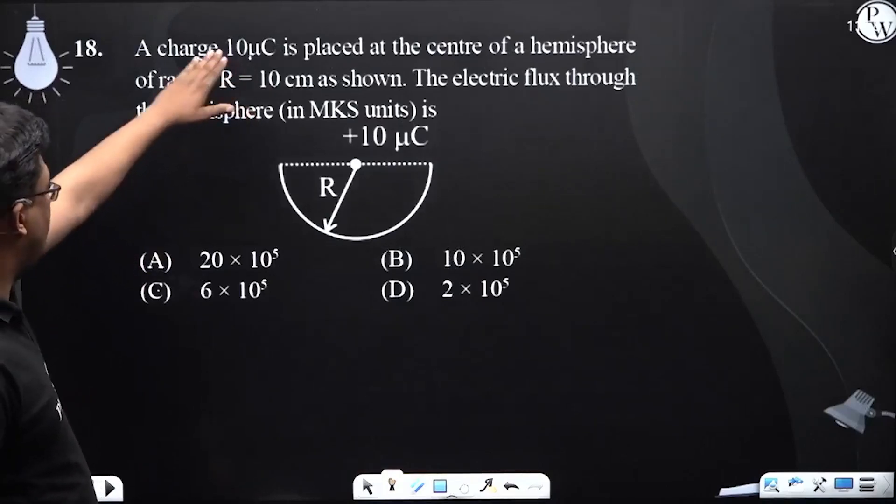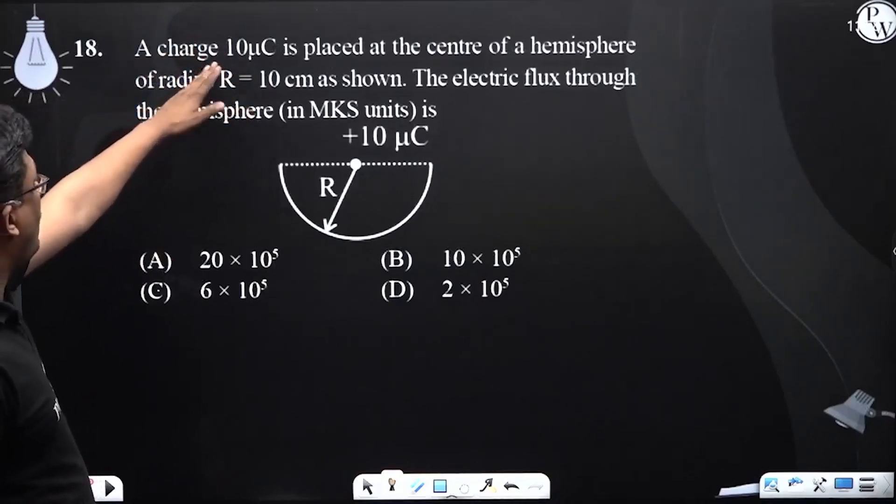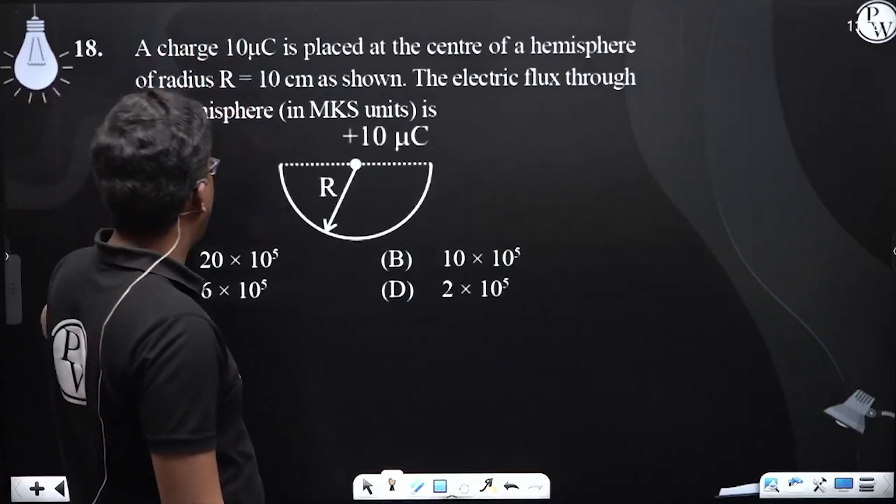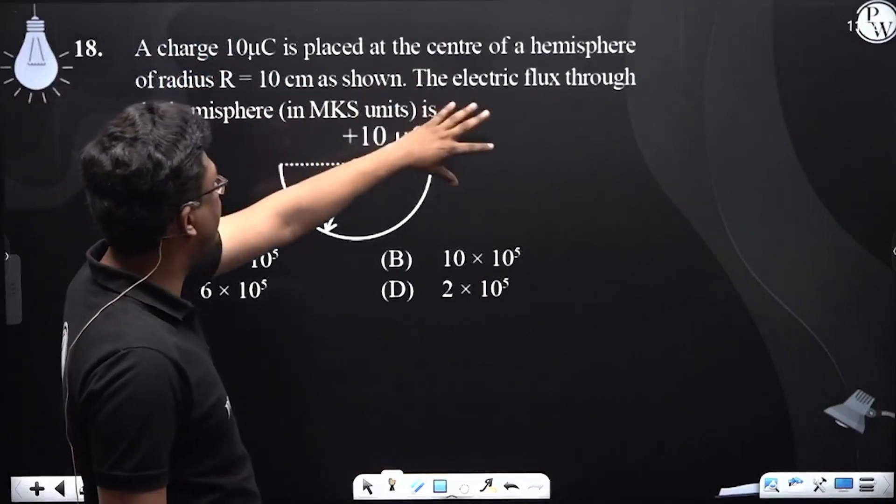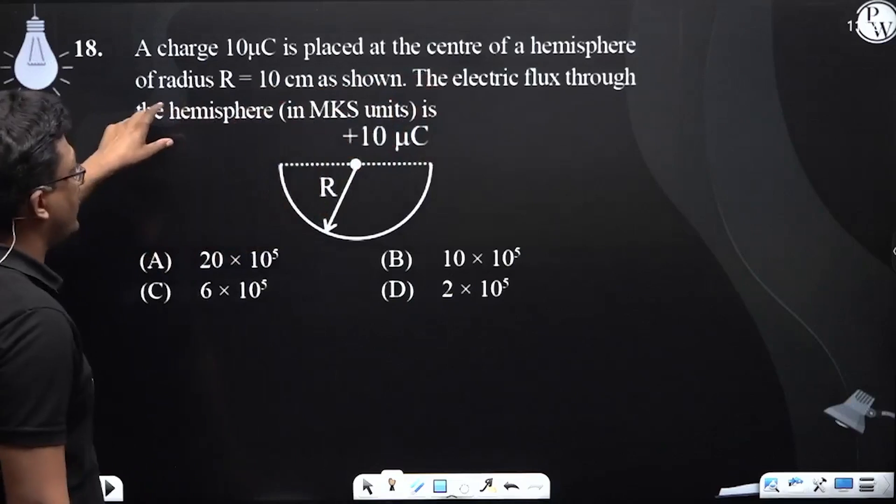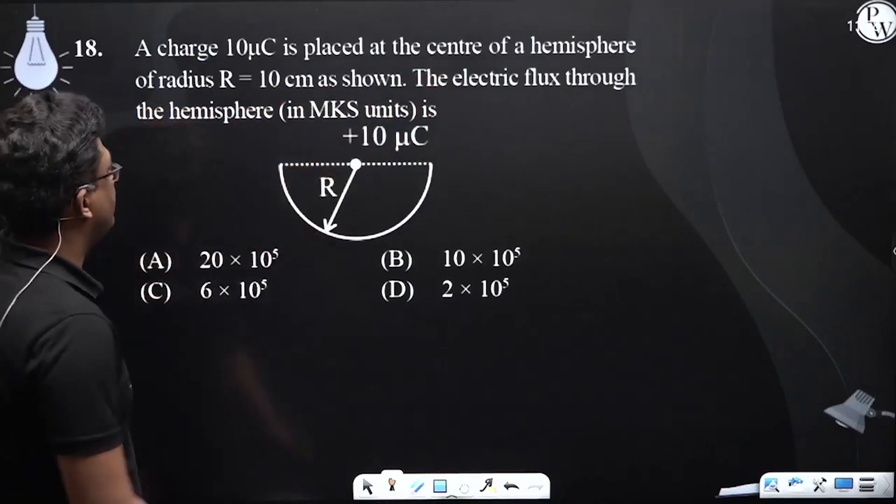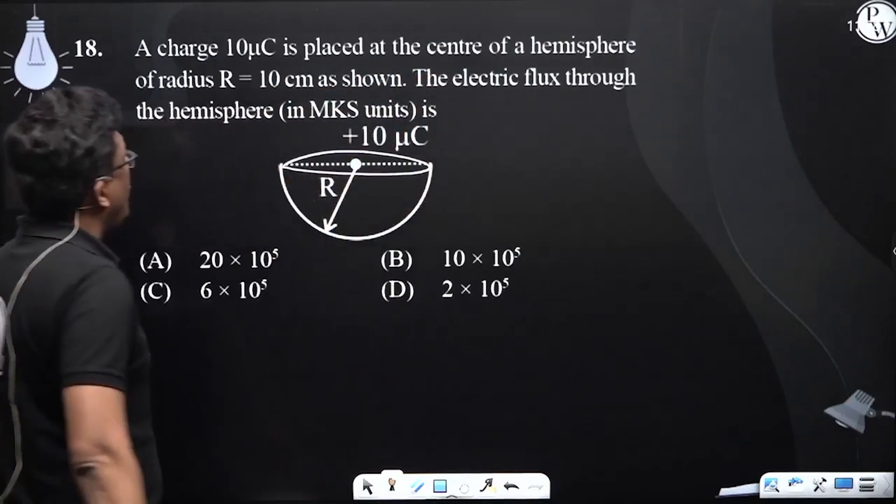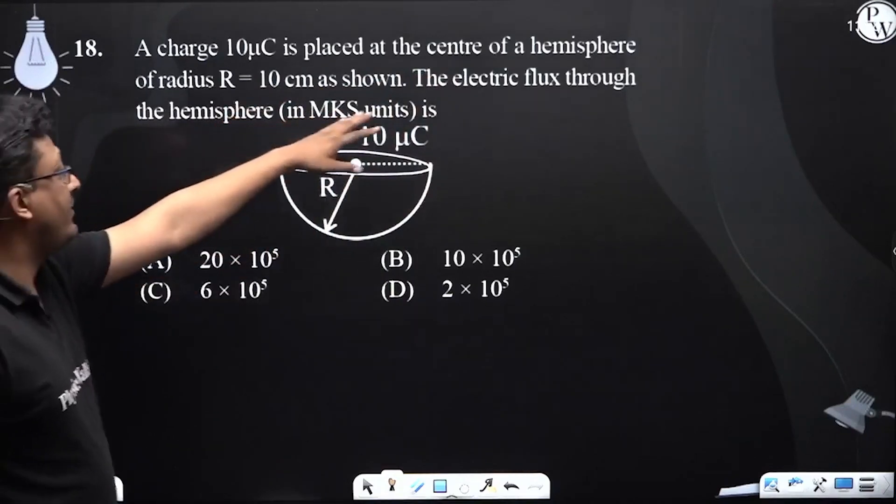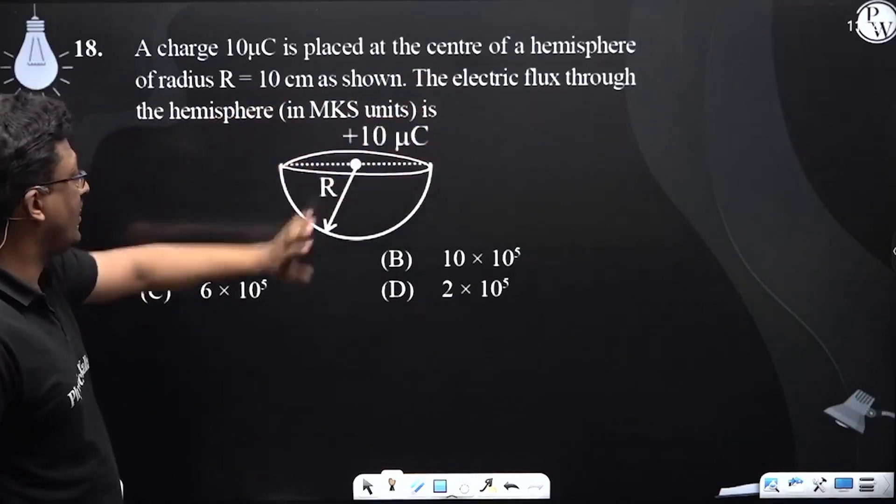Question number 18: A charge 10 microcoulomb is placed at the center of a hemisphere of radius capital R = 10 centimeters as shown. Find the electric flux through the hemisphere.